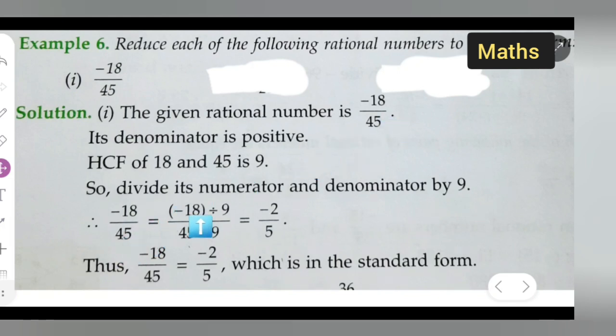It is equal to minus 18 upon 45 divided by 9. So when you cancel this we'll get 9 1s are 9. 9 2s are 18. 9 1s are 9. 9 5s are 45. So basically we'll get minus 2 upon 5 itself.